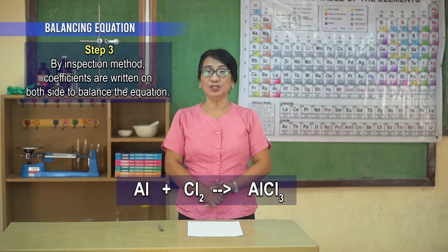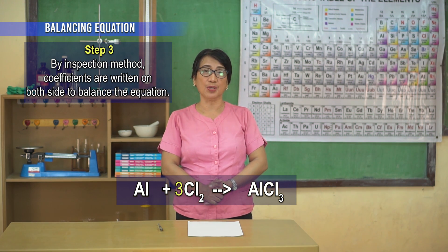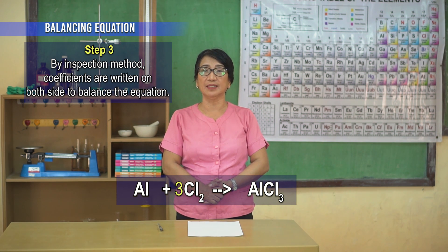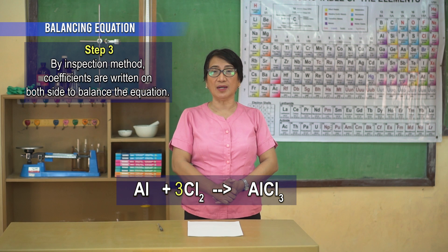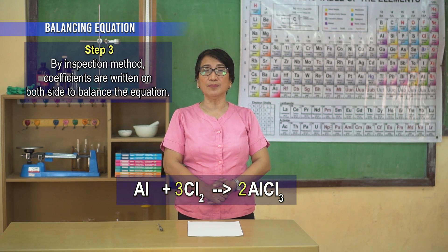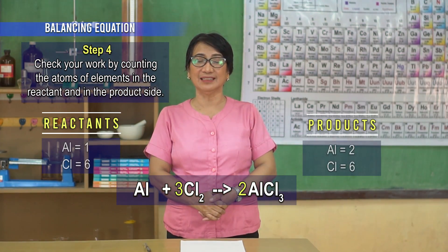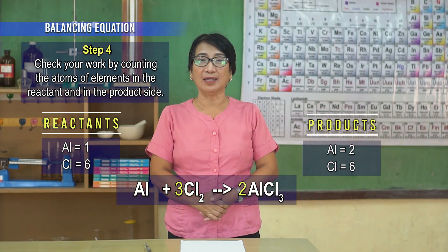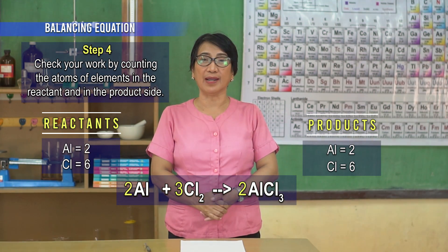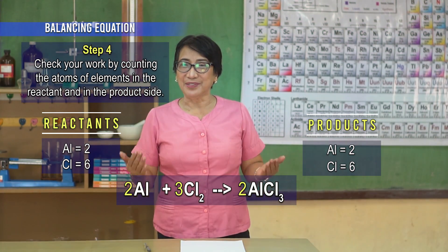Step three: by the inspection method, coefficients are written on both sides to balance the equation. Let us put a coefficient of 3 in front of chlorine on the reactants side, so it becomes 6. Following the rule, the number of atoms of the element equals the coefficient multiplied by each subscript. To make the number of chlorine atoms also 6 in the product, we add a coefficient of 2 in front of aluminum chloride, so the atoms of chlorine are now 6. Step four: check your work by counting the atoms of elements in the reactants and in the product side. The number of aluminum atoms is unbalanced. We add a coefficient of 2 on the reactants side so that the number of aluminum atoms on both sides becomes equal. Finally, we have the balanced chemical equation.